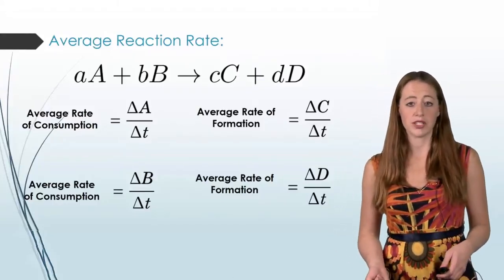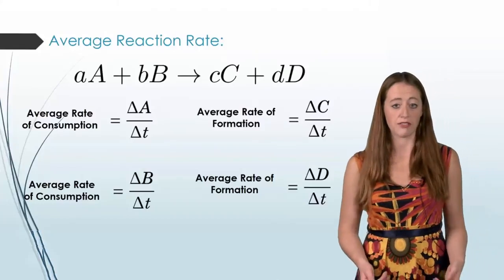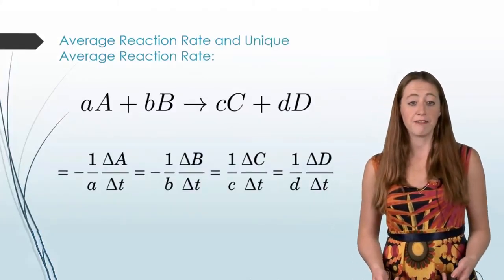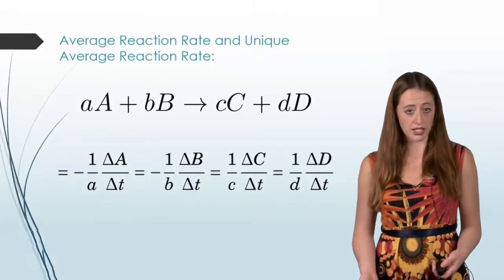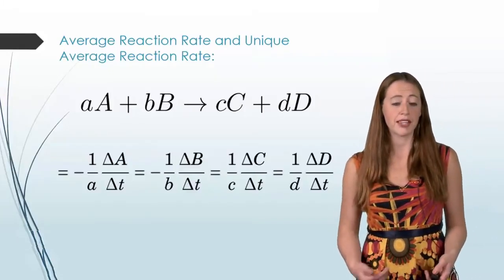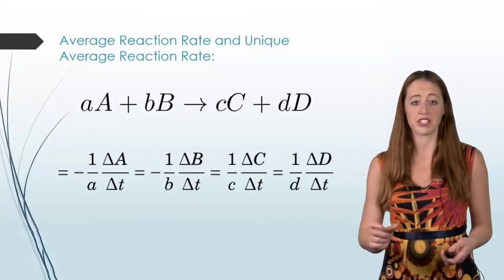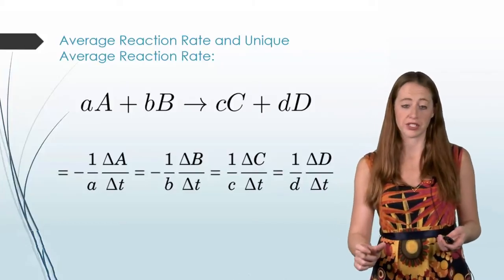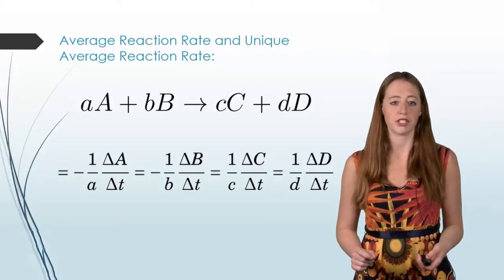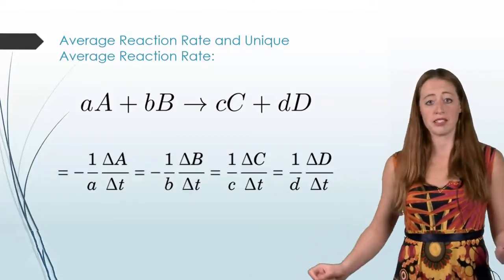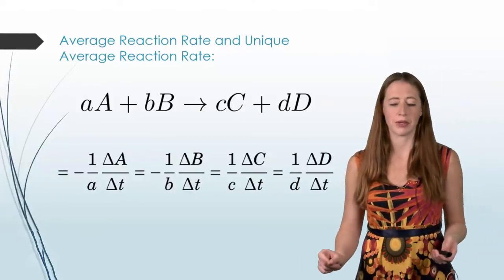So what we can do is we can normalize these based on the coefficients. And divide the concentration over time by the stoichiometric coefficient, or the coefficient that is in front of the equation, the balanced chemical equation. Now these should all be the same. If not something else is going wrong.